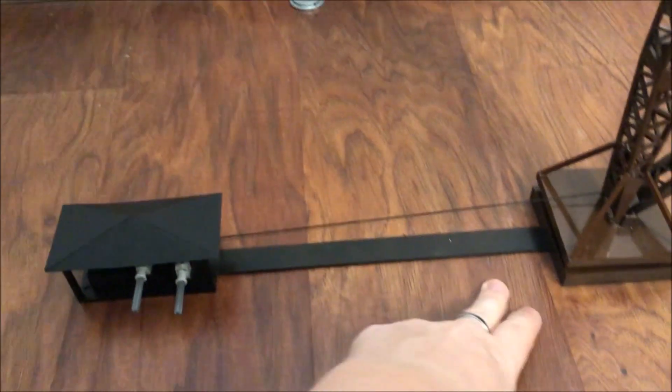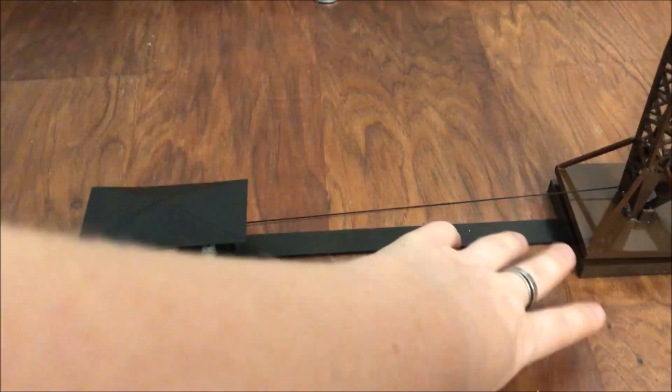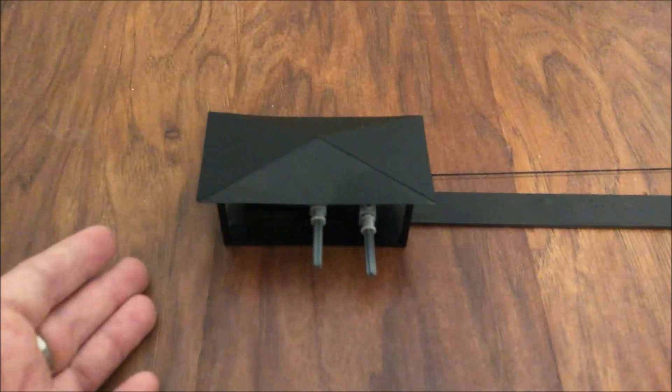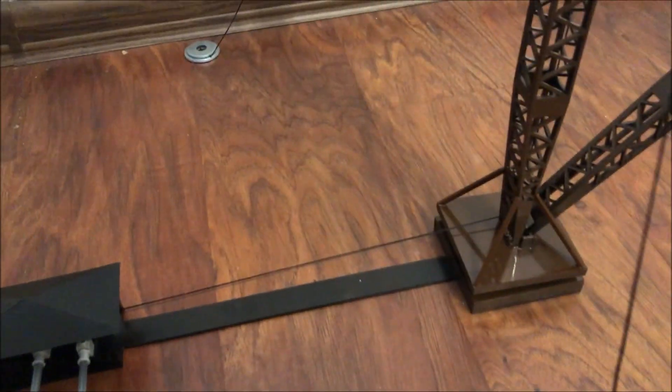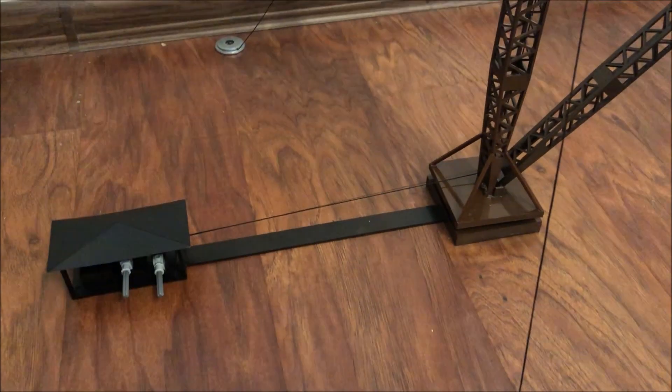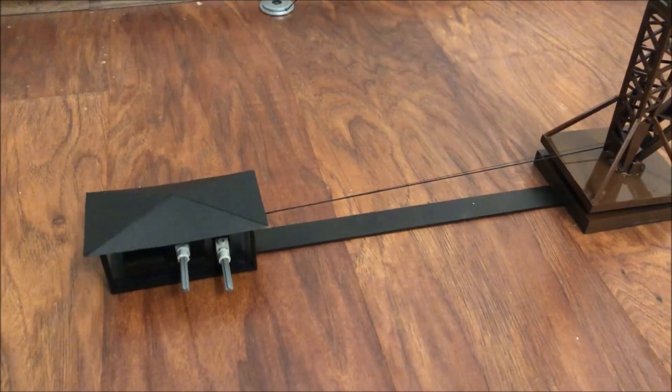The strip here is simply made for better connection between this part where the winches are and the crane itself. In reality, of course, there's no such thing, but still, this is a model, so we make some such conventions. Such a crane.